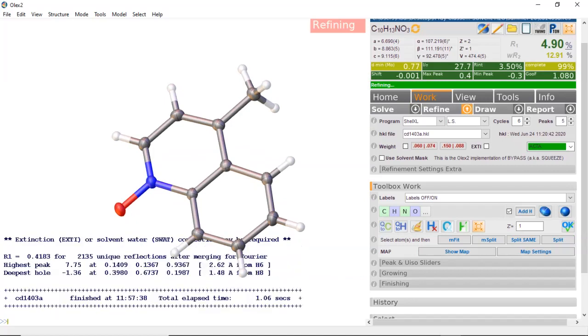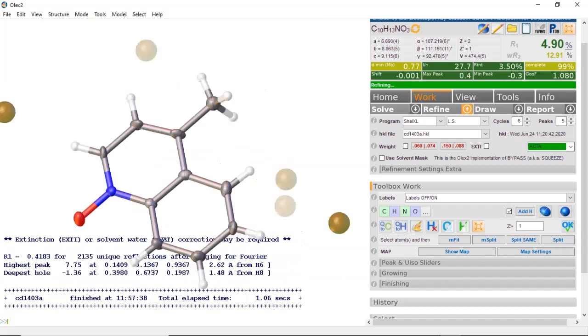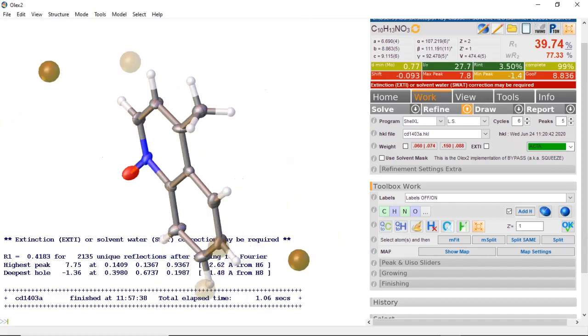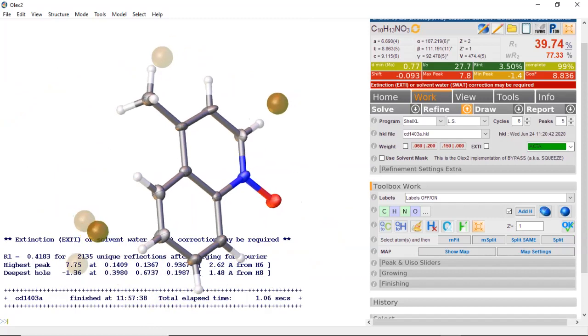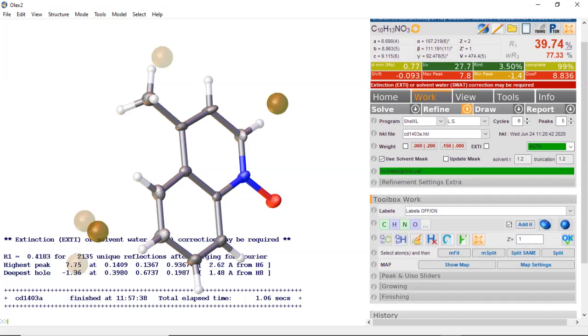At this point you've solved the structure and you're like, hey I don't know what this solvent is, maybe it's not important, so you want to do a squeeze. There are different ways you can do this - you can take your HKL file and your RES file, copy it in a different folder, go into Platon and do the squeeze command. But Olex does it right on site for you. What you want to do is click on use solvent mask and click on update mask.